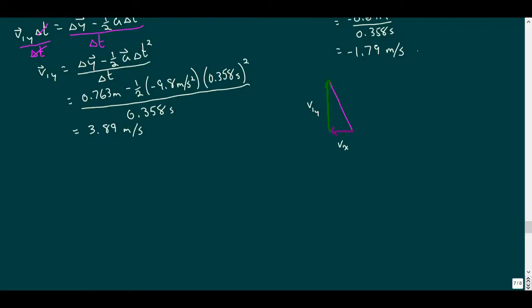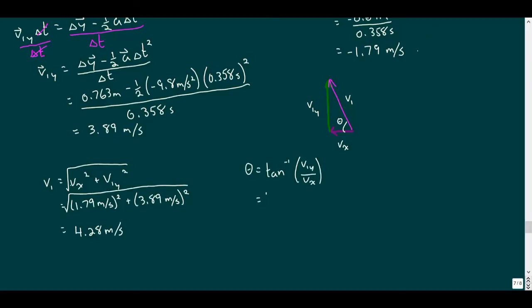So our launch velocity is the vector sum of these velocities in the x and y direction. Using Pythagoras, we find the magnitude is 4.28 meters per second. While using trigonometry, we find the angle is 65.3 degrees above the horizontal.